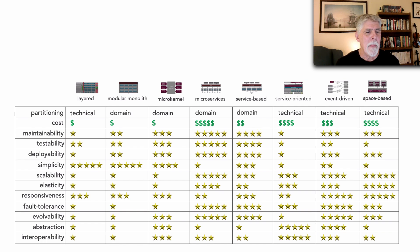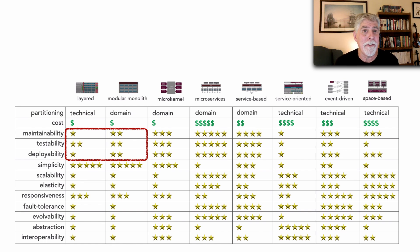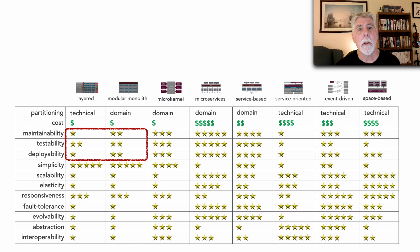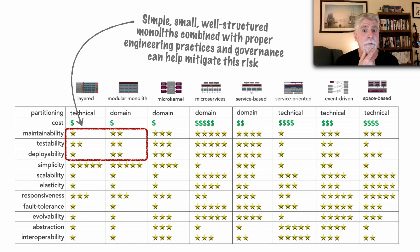There's one other example I wanted to show you. We've been focusing on one extreme — microservices — but what about monoliths? They have risk as well. We notice that with the layered and the modular monolith, they're not very agile; these two architecture styles don't lend themselves towards maintainability, testability, and deployability. Does that mean we can't use them when facing constant change? Of course not — it means that's our risk area. To mitigate that risk, we focus on simple, small, well-structured monoliths, combined with proper engineering practices and tight governance using automated fitness functions.